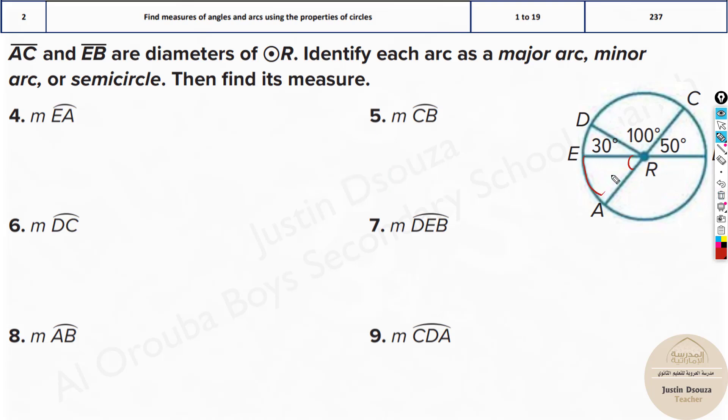To find arc EA just find this angle. So you know AC is 180 degrees. You have 130, what is the remaining? 180 minus 130 will be 50. So it's a minor arc and 50 degrees.